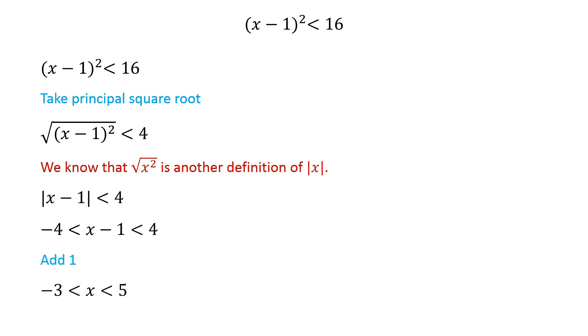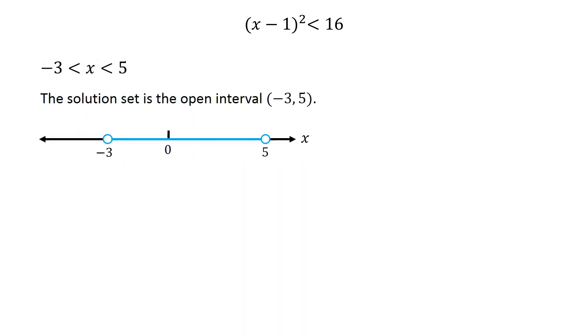Adding 1 to this inequality we get, x is greater than negative 3 and less than 5. Thus the solution set of this inequality is the open interval from negative 3 to 5.